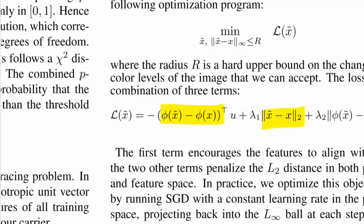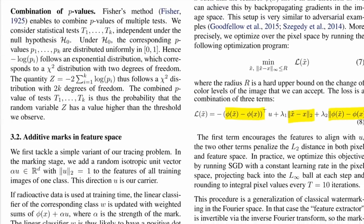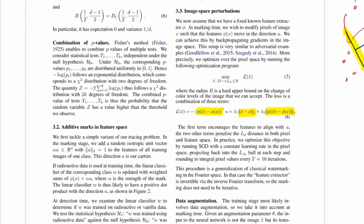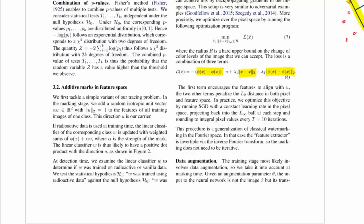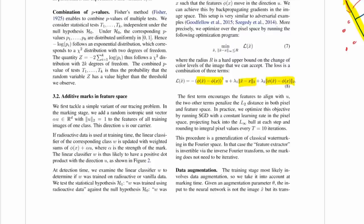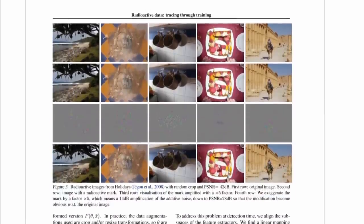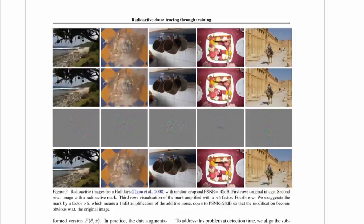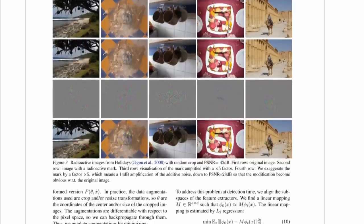They define a loss that they minimize — here is where you want to go in feature space — and they have regularizers so that the perturbation in input space is not too high and the perturbation in feature space is not too high either. They also want the radioactive marking to be undetectable, and to be robust to relabeling — if you give someone data and they relabel it with Mechanical Turk workers, the workers will assign the same label even if the data is radioactively marked. They also backpropagate through differentiable data augmentation procedures.